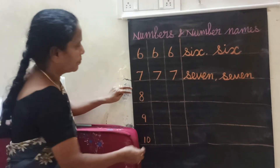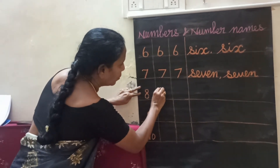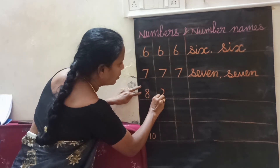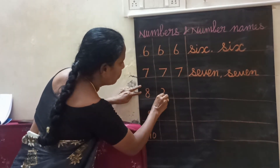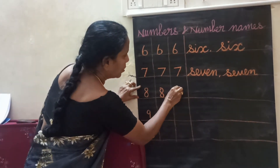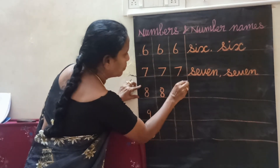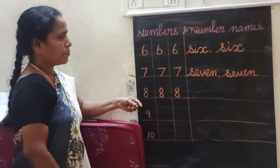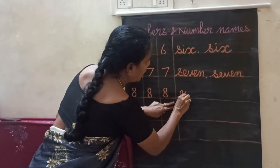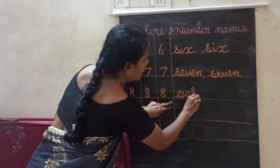8. Curve, 1 curve. Like this. Again 1 curve, then go up and draw like this. 1 curve, again curve, and go like this. Number 8. Number 8. E, I, G, H, T.